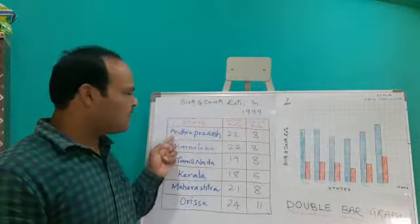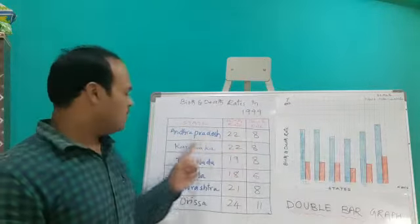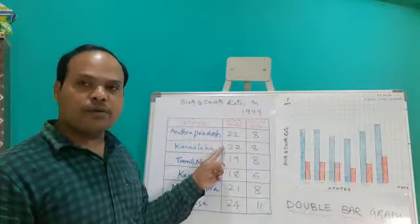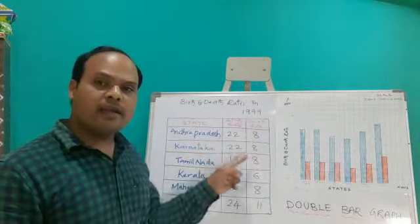If you take the Andhra Pradesh, birth rate is 22 and death rate is 8. Karnataka, birth rate is 22 and death rate is 8. Tamil Nadu, birth rate is 19, death rate is 8.